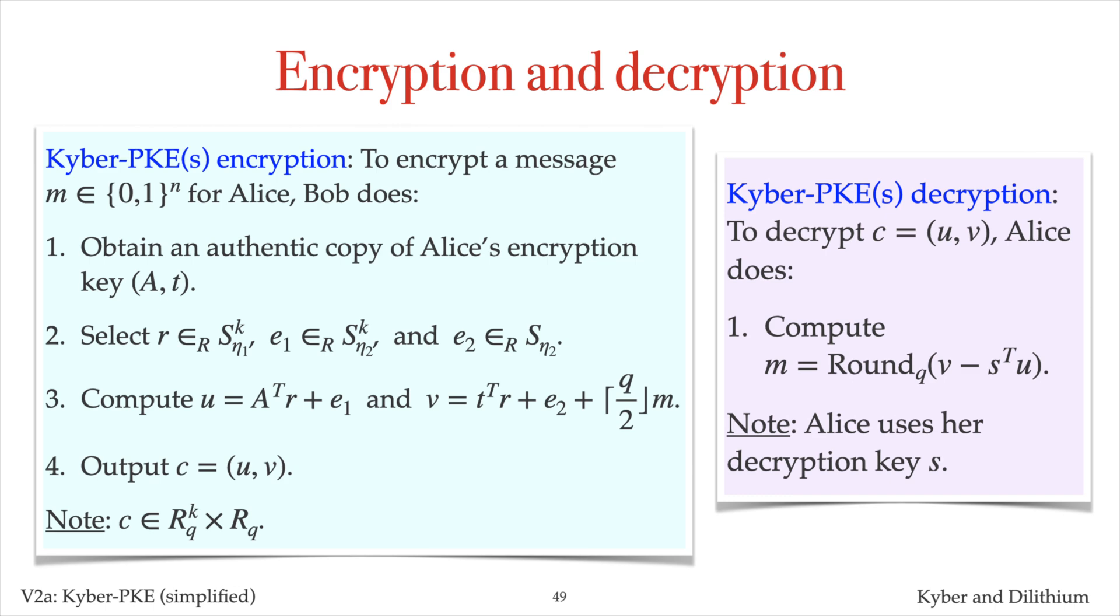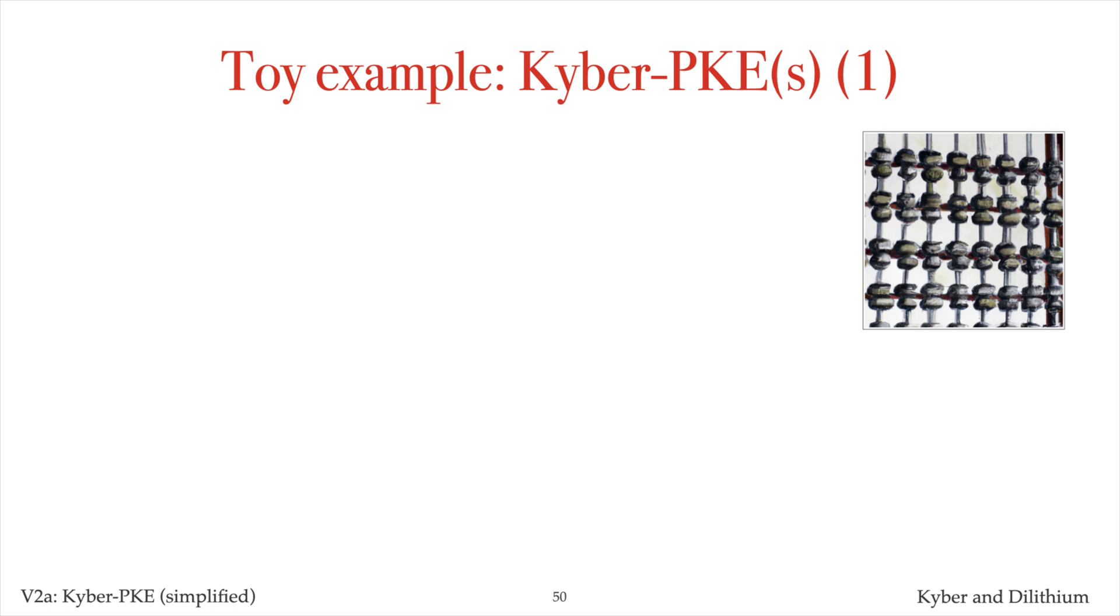I need to justify why decryption works. That is, why decryption produces the correct plaintext M. I also need to justify why the scheme is secure. Let me first do an example. Here is a toy example of the simplified Kyber public key encryption scheme. By toy, I mean that the parameters are small, so that the polynomials and polynomial vectors fit on a slide. But the parameters are too small for the public encryption scheme to be secure. The domain parameters are q equals 137, n equals 4, k equals 2, eta 1 equals 2, and eta 2 equals 2.